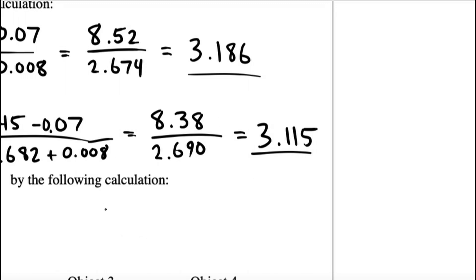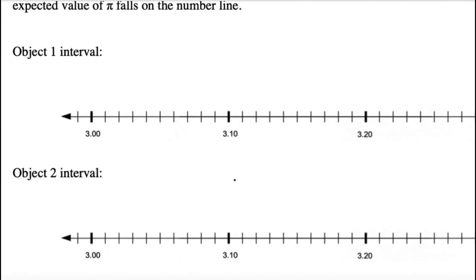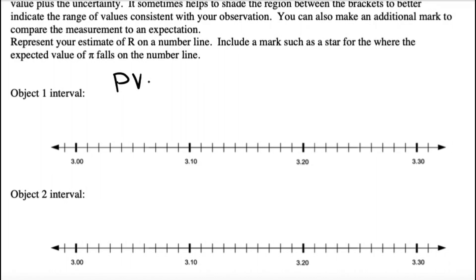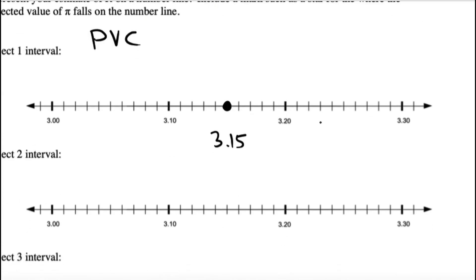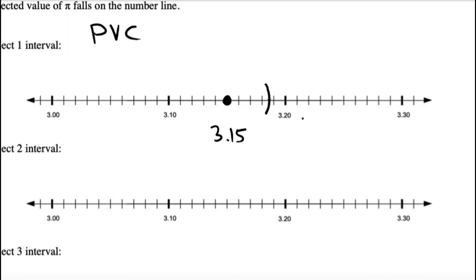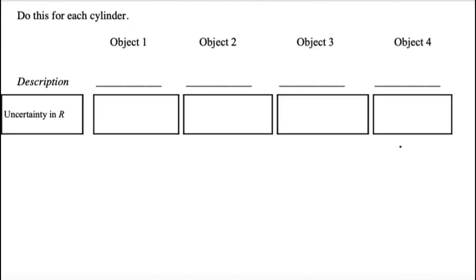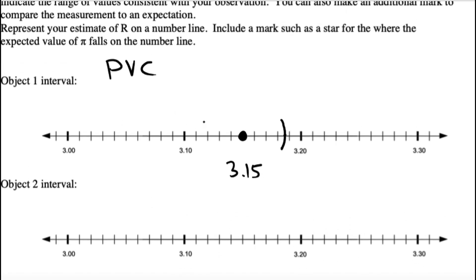So, what you get here is you get a range, and we want to put that into a confidence interval. That's the last step of this part of the lab. You do it for each object. Maybe I'll do it on the next page. It has actual number lines for you to plot your objects. So, for the PVC, my interval came out to 3.15, put a dot right there. It could have extended as high as 3.186. So, that's like here.